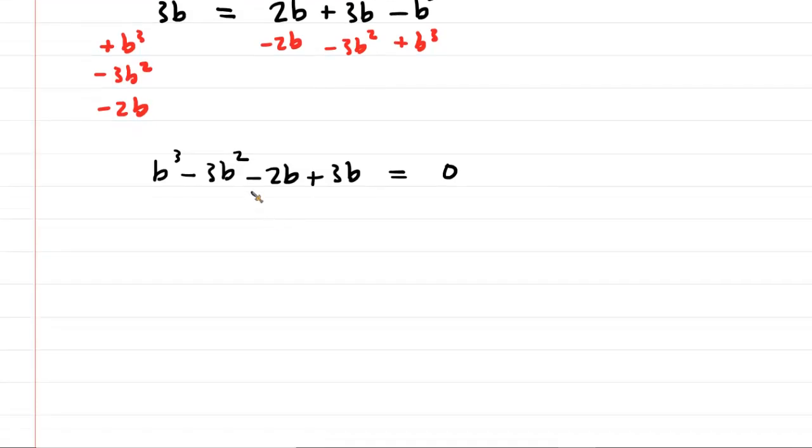We can combine some like terms, of course. We have a minus 2b plus a 3b. That just becomes plus 1b. So we might as well clean that up. And there we go. And now we have to solve this for b.